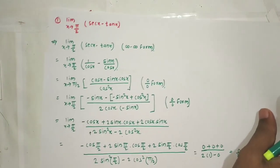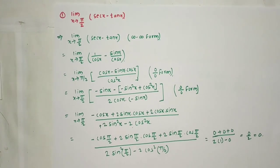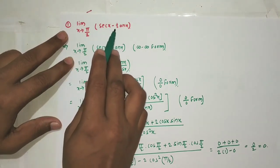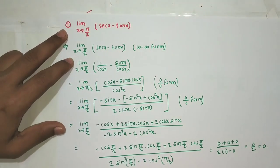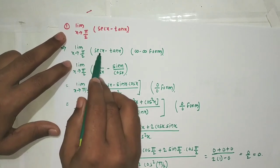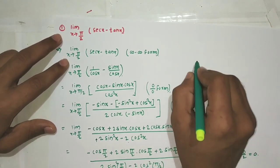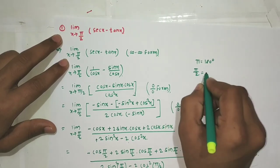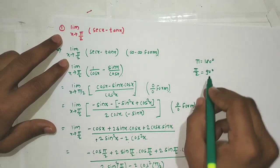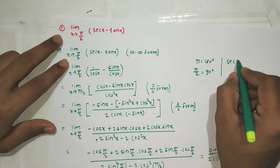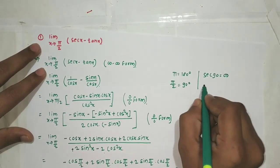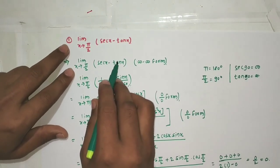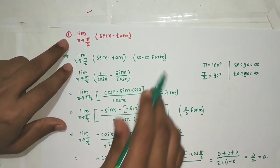Next problem: limit x tending to π/2 of [sec(x) - tan(x)]. At x = π/2 (90°), sec(90°) = infinity and tan(90°) = infinity. So this is the infinity minus infinity form.